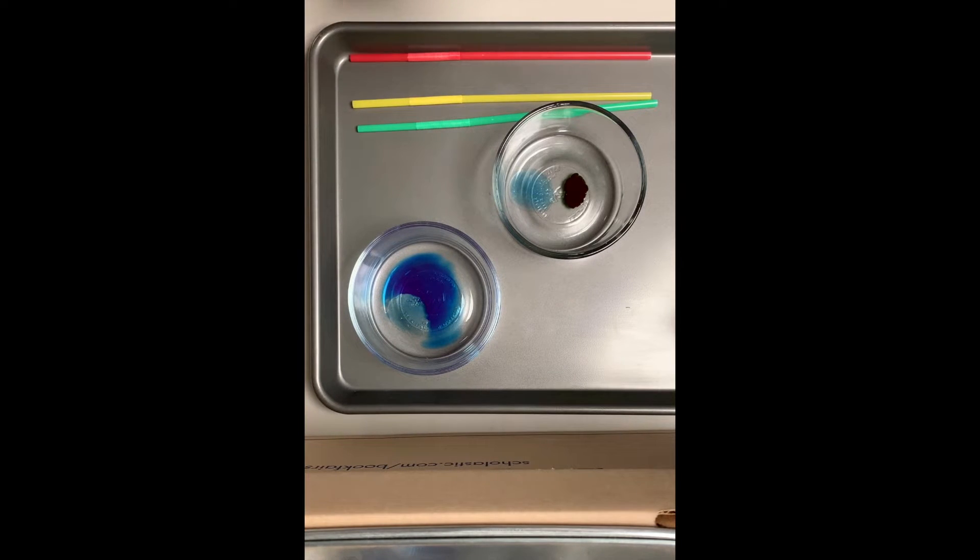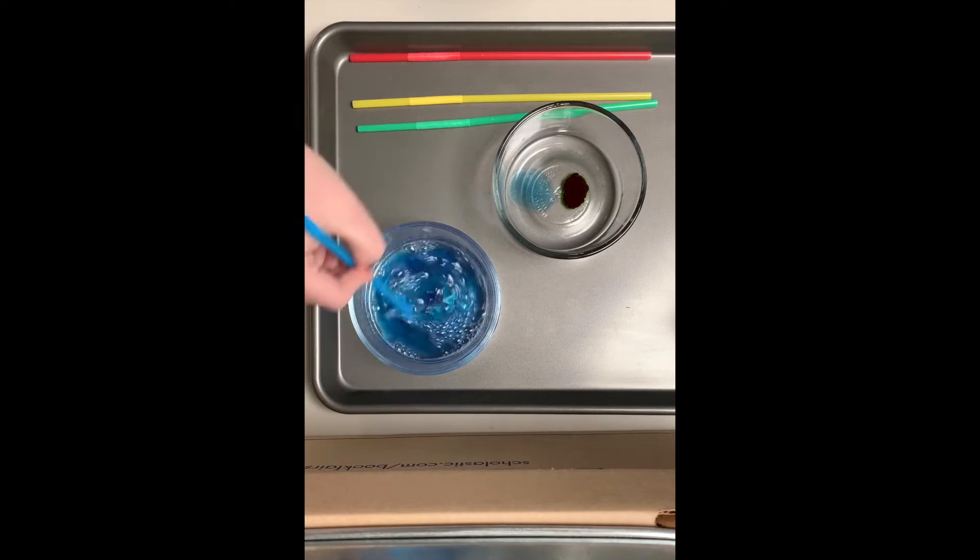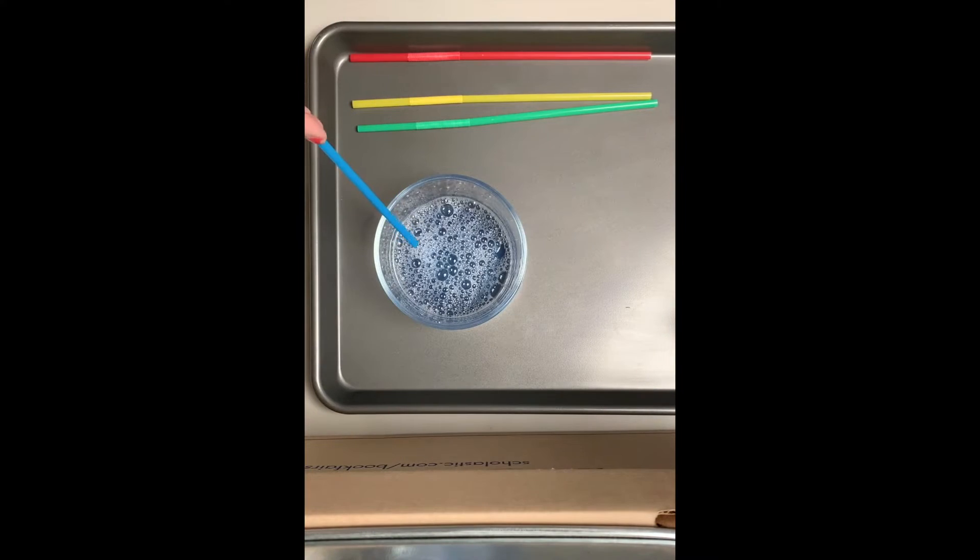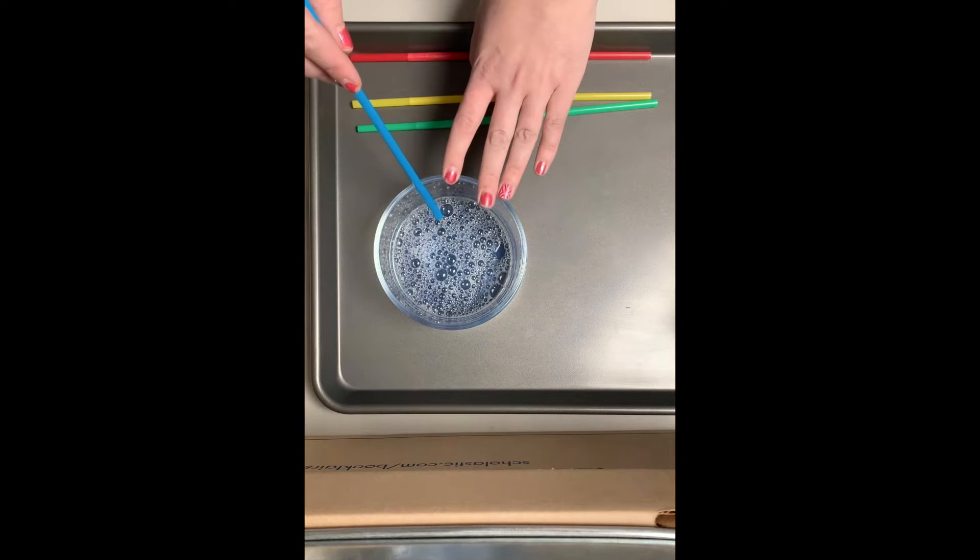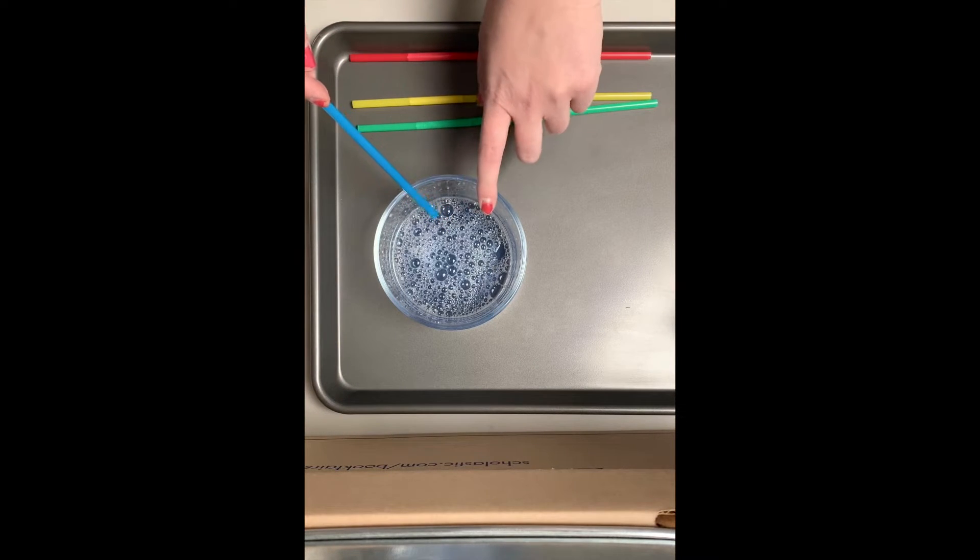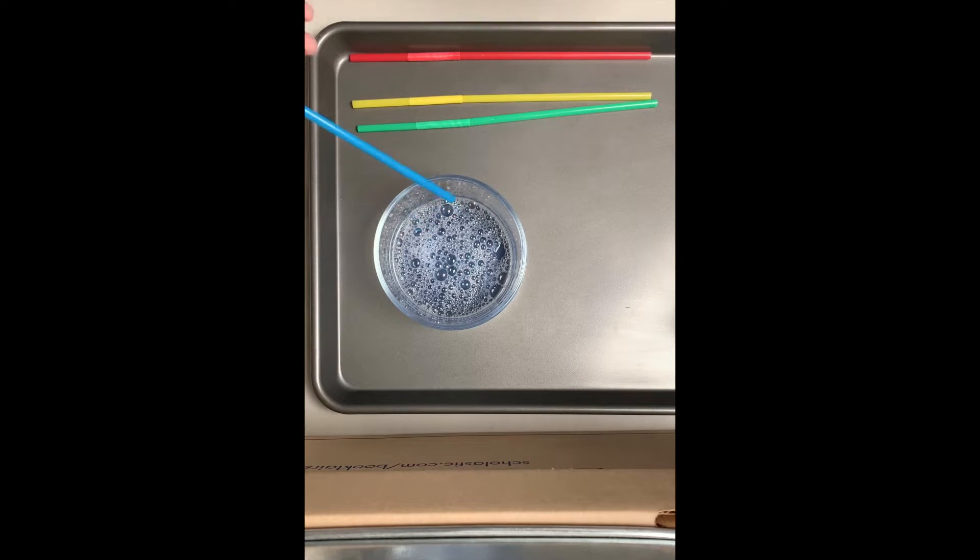So what we're gonna do now is we're going to stir up our soap water, and we want to do a test paper. So just a plain piece of paper. We want to test our bubbles on that first to make sure that we have enough color in here so that we don't ruin our Star Wars print.